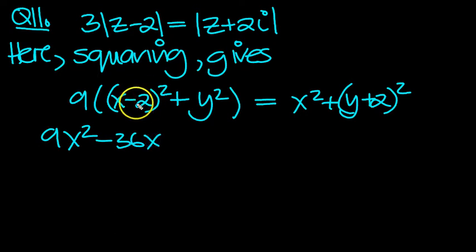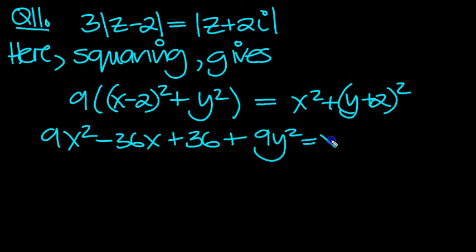Then plus a 4 times the 9 is plus 36 plus 9 lots of y squareds is equal to x squared plus we've got a y squared plus a 4y is the middle term, two middle terms added. And then we've got a plus 4.